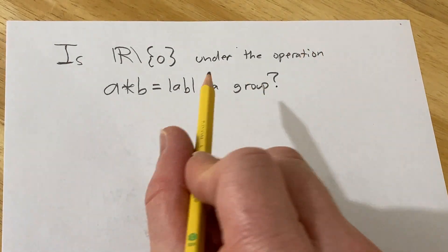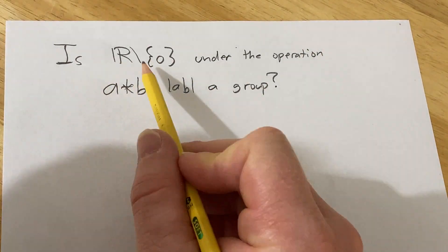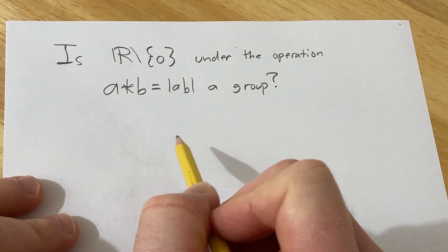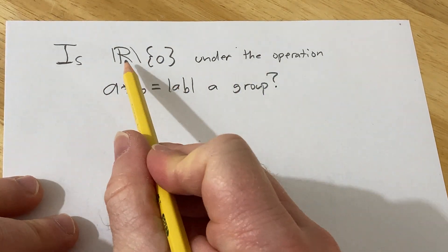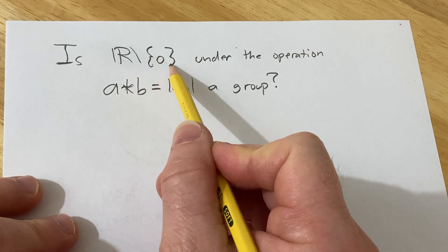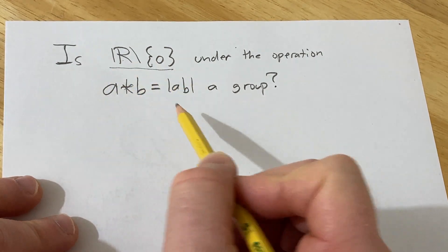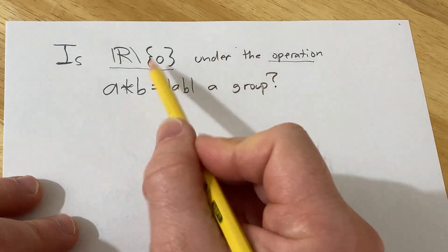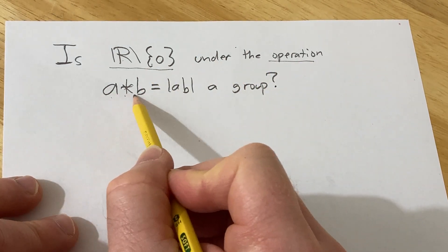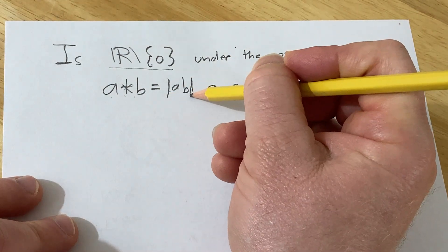In this video we have a problem: determine if this set under this operation is a group. This is the set of all real numbers except zero — all of the non-zero real numbers — and the binary operation on this set is defined as a star b equals the absolute value of ab.